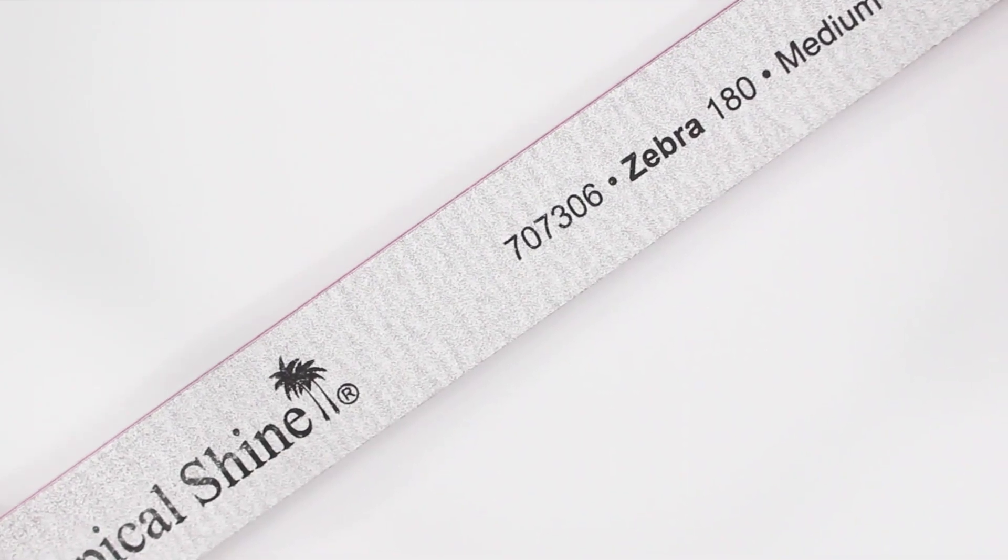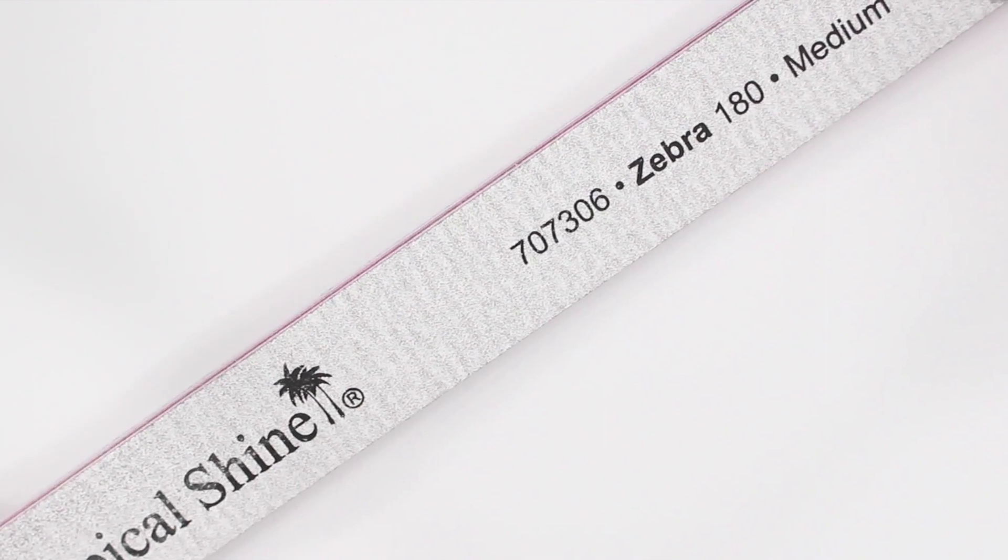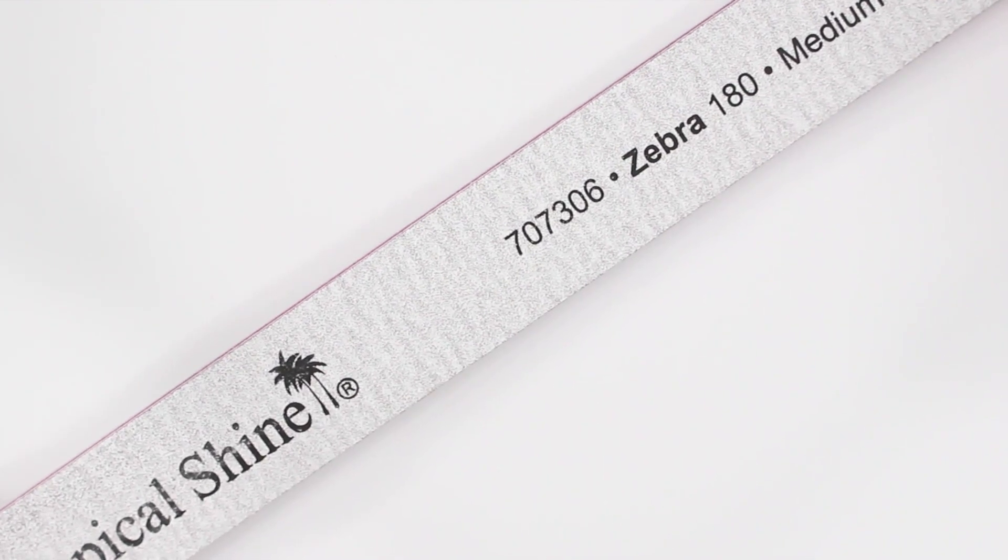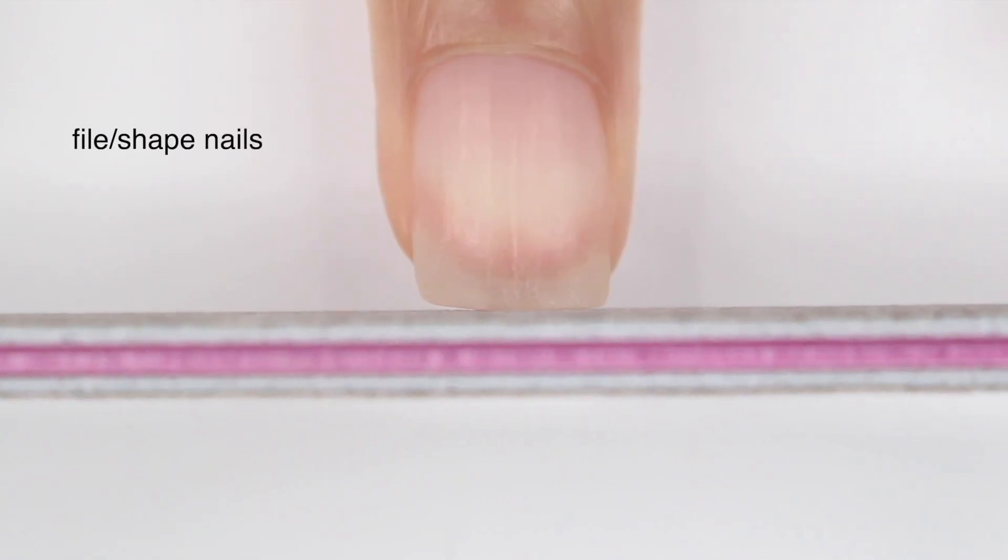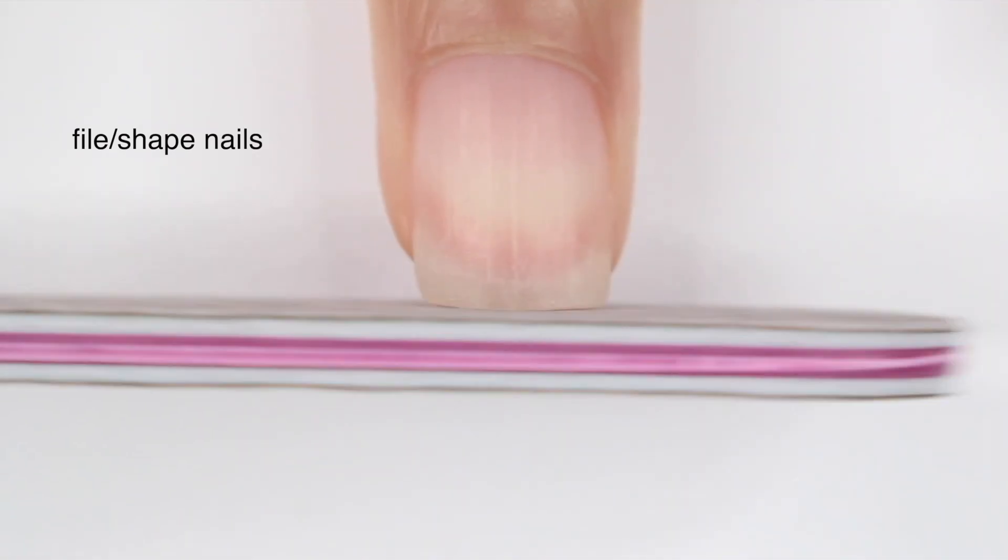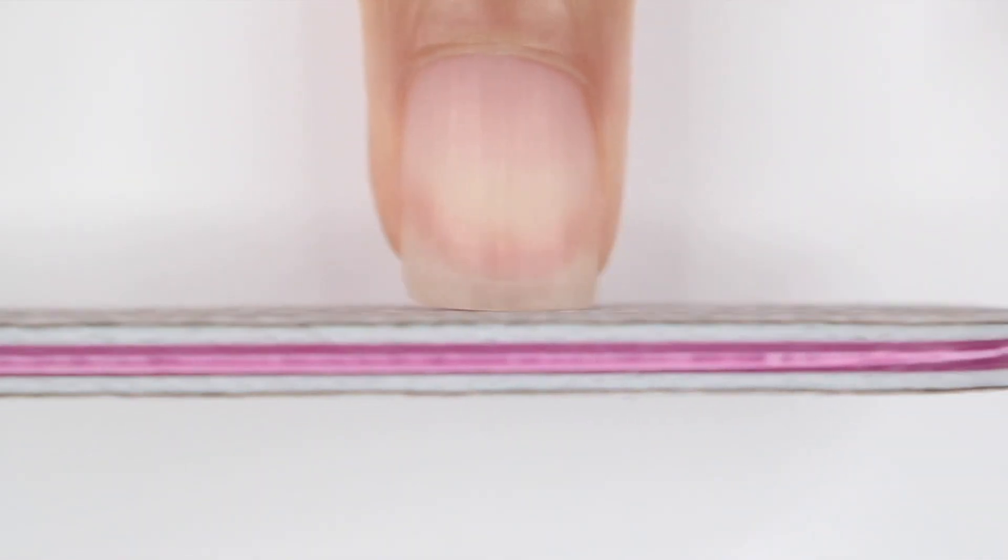If you have weaker nails or splitting nails, I would go up to something around 240 or 320, just because it's going to be more gentle, but I know my nails can take this. So I'm just going to go ahead and file straight across in one direction. And this is again going to depend on your nail shape, but I'll just go straight across and then straight up the sides of my nails.